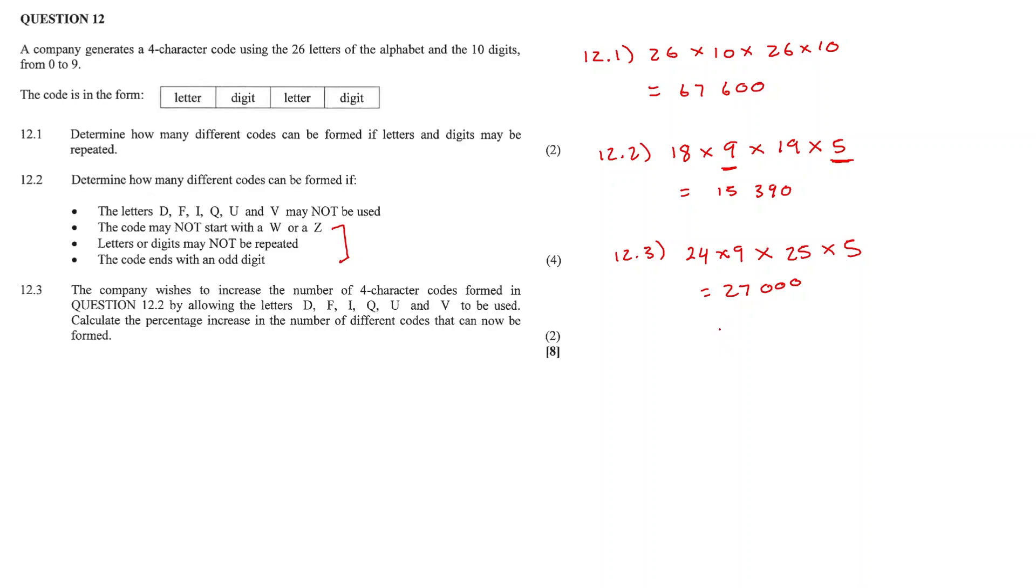We then want to calculate percentage increase. So we take how many we can now form minus the amount we could form if we did not use the six letters included, which is 15,390, all over our original value of 15,390. And we times that by a hundred to get a percentage. And if we do that, we get 75.44% increase. And that's all for this video. Thank you.